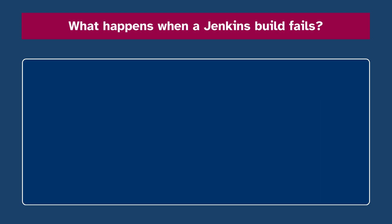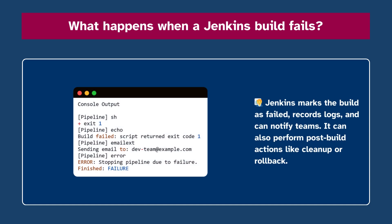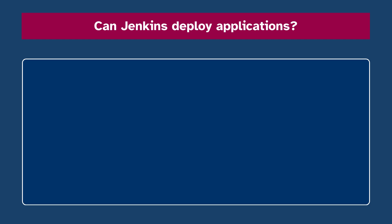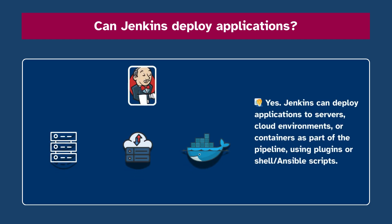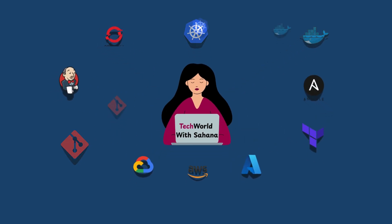Number twenty-four: What happens when a Jenkins build fails? Jenkins marks the job as failed, records logs, and can notify teams. It can also perform post-build actions like cleanup or rollback. Number twenty-five: Can Jenkins deploy applications? Yes, Jenkins can deploy applications to servers, cloud environments, or containers as part of the pipeline, using plugins or shell or Ansible scripts.